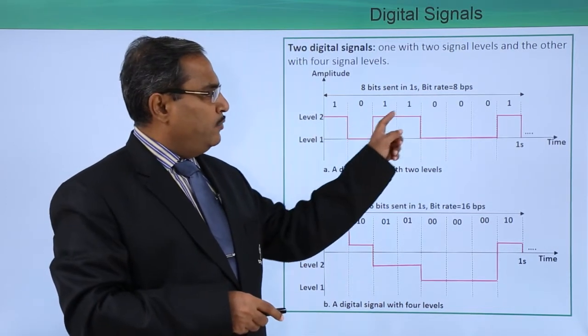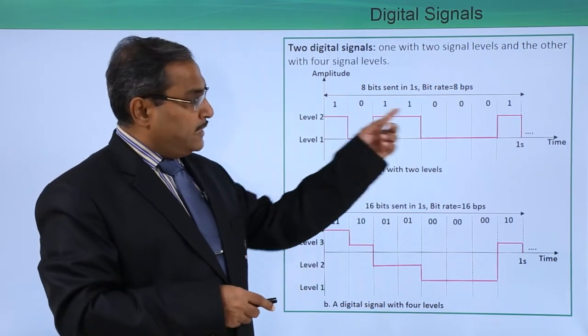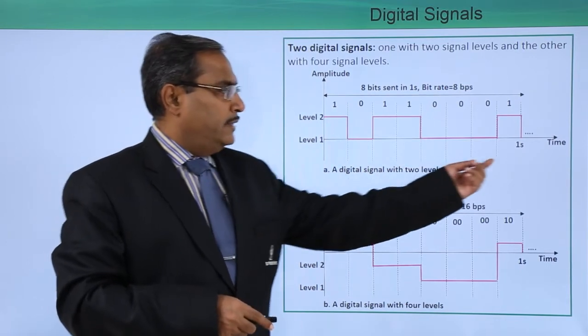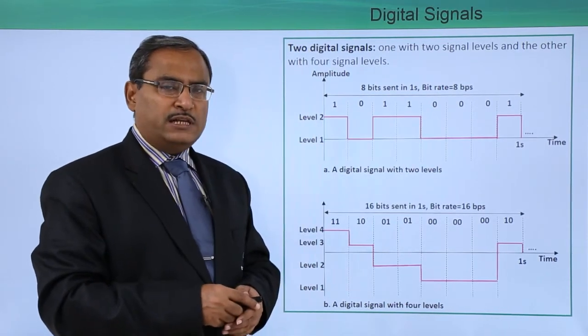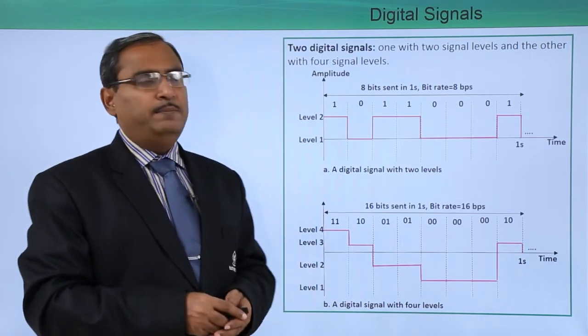Each time 1 has been represented by the high level, let it be level 2, and each time 0 has been represented by level 1 or the low level. This is 1 second within which these 8 bits have been transmitted, so the data transfer rate in this case will be 8 BPS.